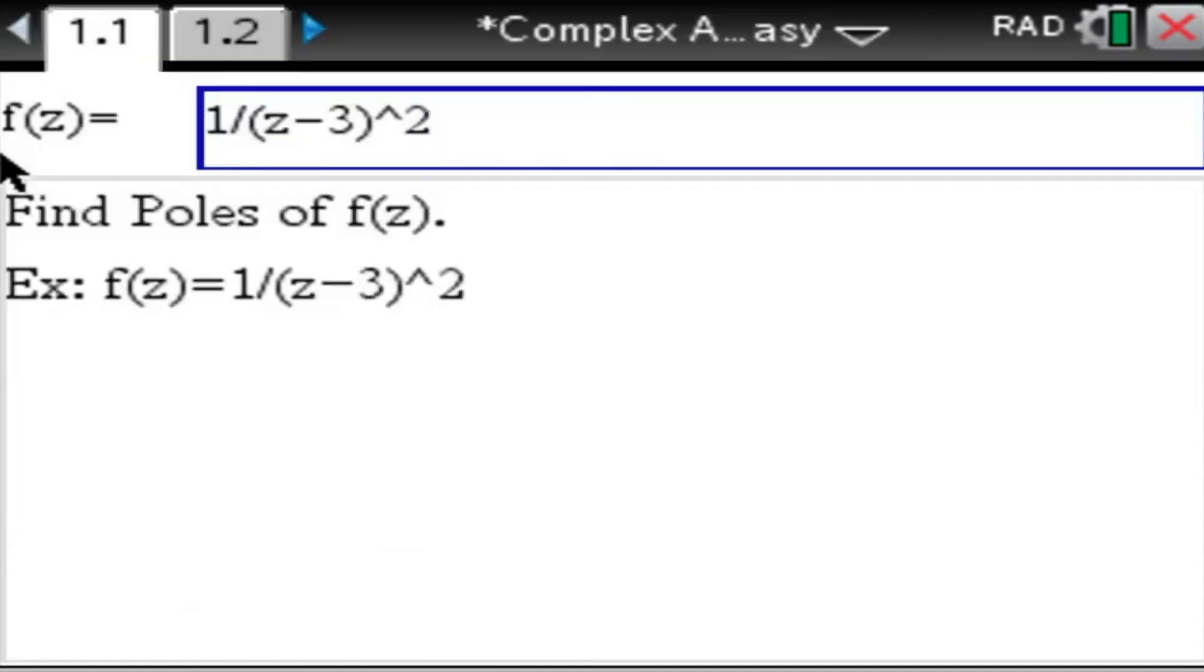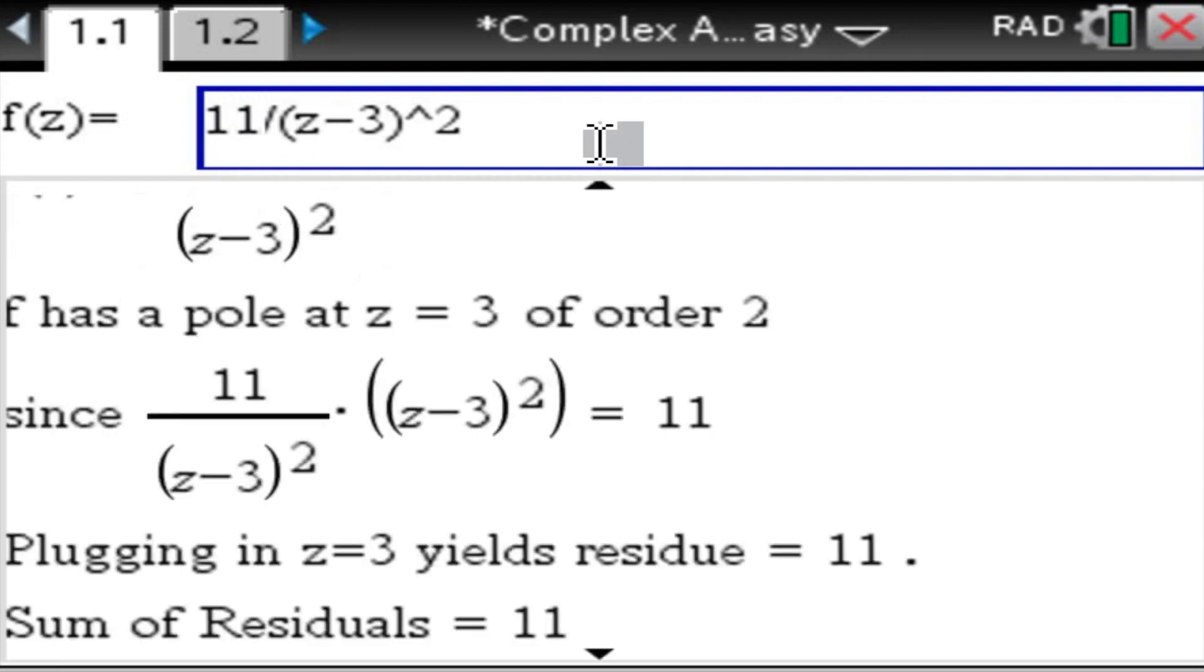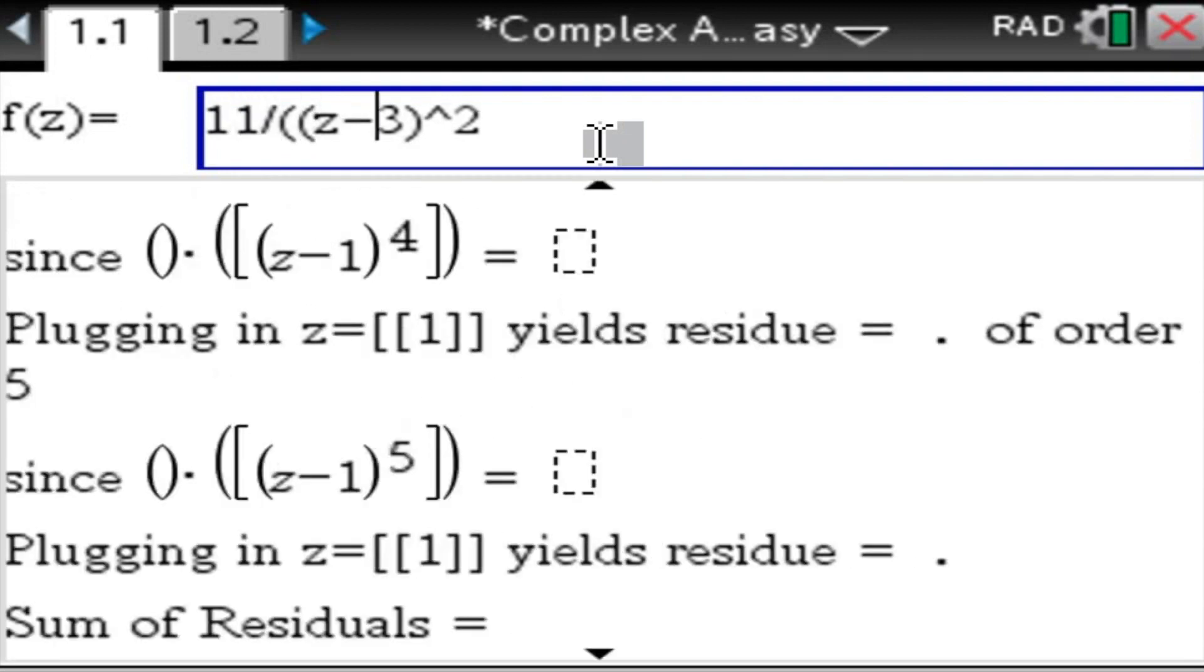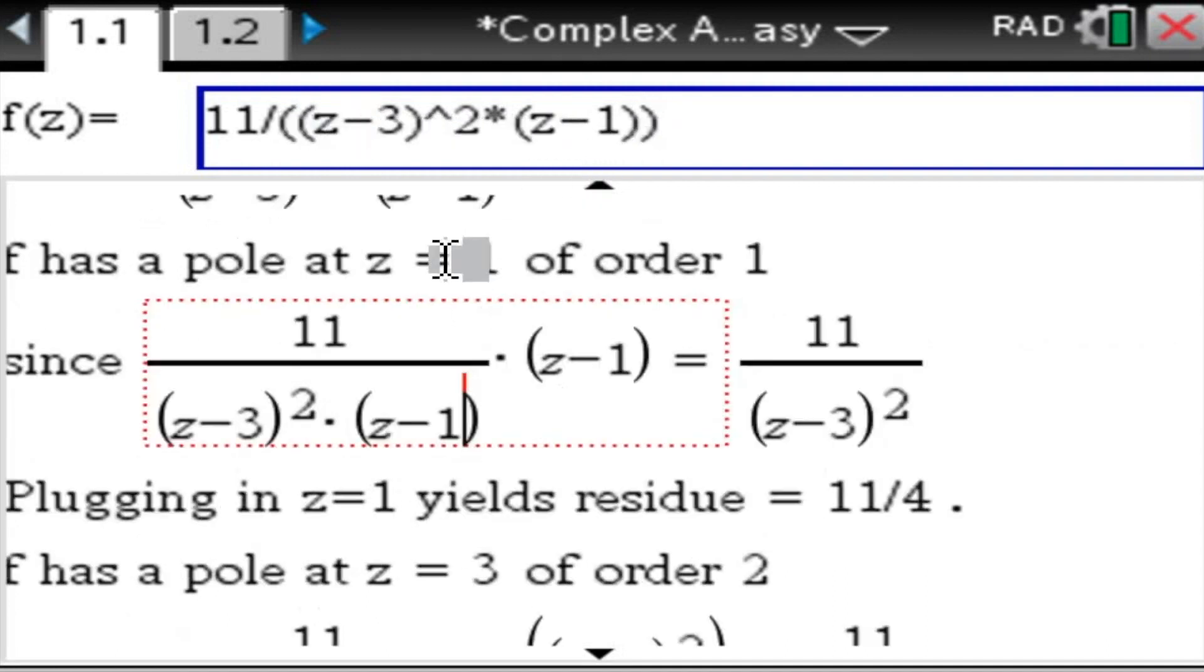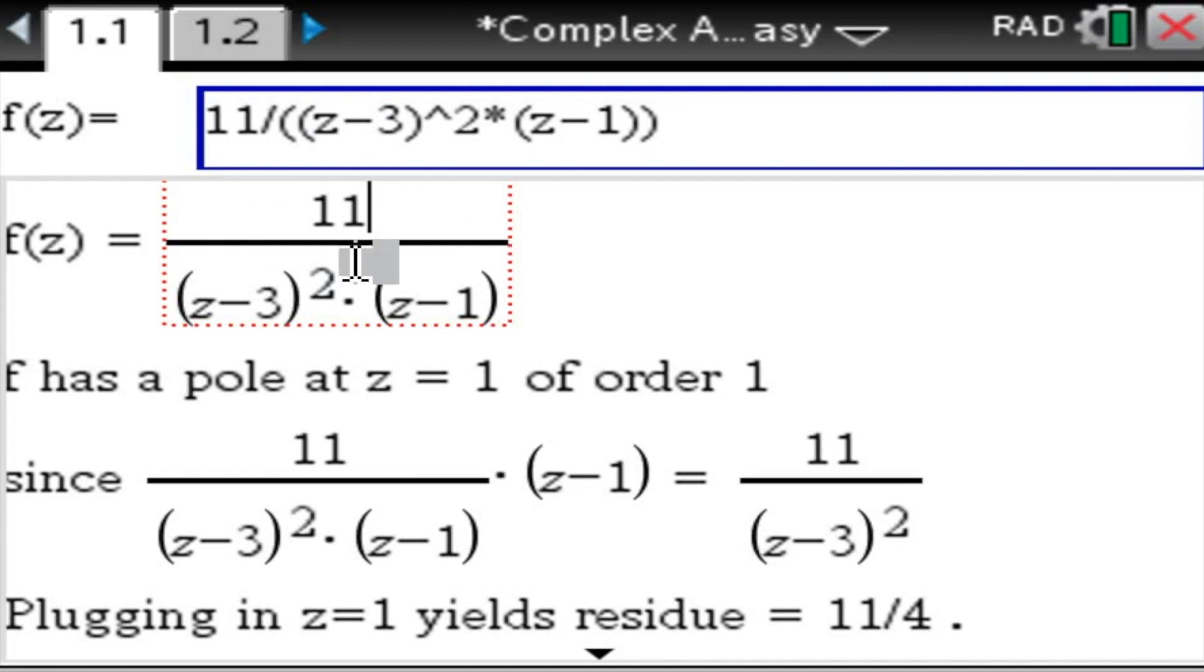Let's find some poles. Let's say we alter the pre-given function and analyze a function with two different poles at 3 and at 1. So in pretty print, first of all, you have the function rewritten here in pretty format. The pole, there's a pole at z equals 1 and it's of course of order 1. And that residue is 11 over 4.